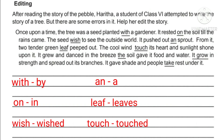It grew and danced in the breeze. The soil gave it food and water. It grew in strength. People take rest under it — 'take' should be the past tense 'took.' So the corrections are: 'wish' to 'wished,' 'sprout' to 'sprouted,' 'touch' to 'touched,' and 'take' to 'took.'